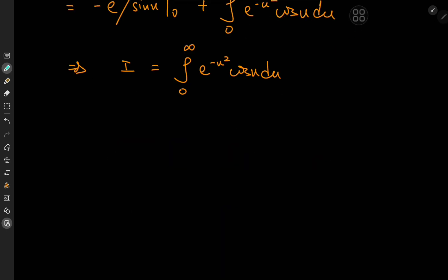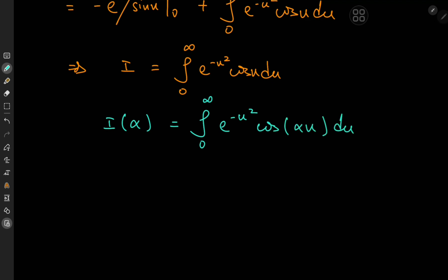The final boss for today's task is this really cool integral that looks like a cosine transform of the Gaussian function, or a Gaussian transform of the cosine function — it sounds really cool either way. This kind of integral can be quite easily solved using Feynman's trick, so we define an integral function I of some parameter alpha as the integral from 0 to infinity of e to the negative u squared times the cosine of alpha times u du.